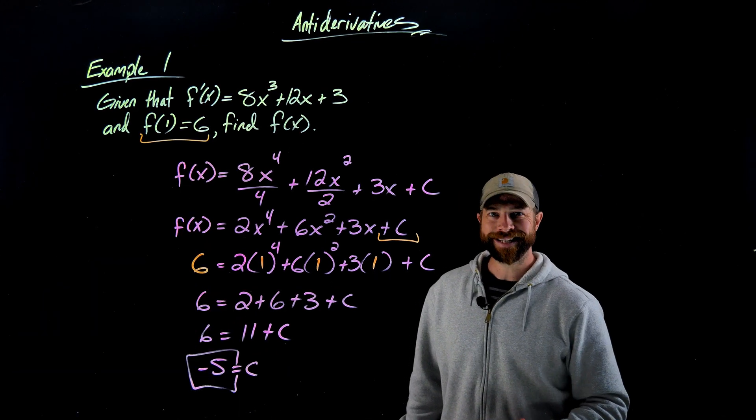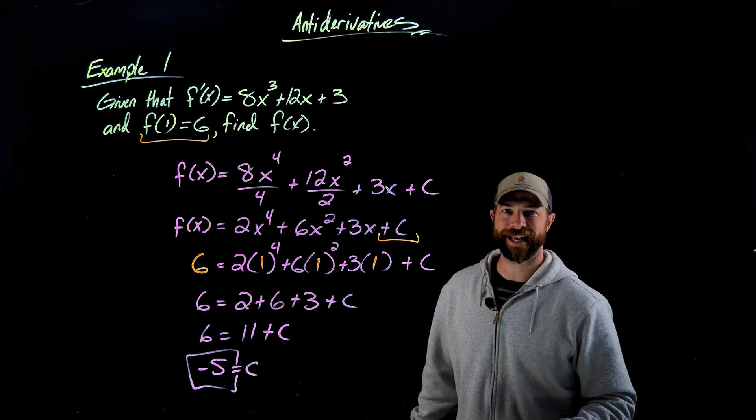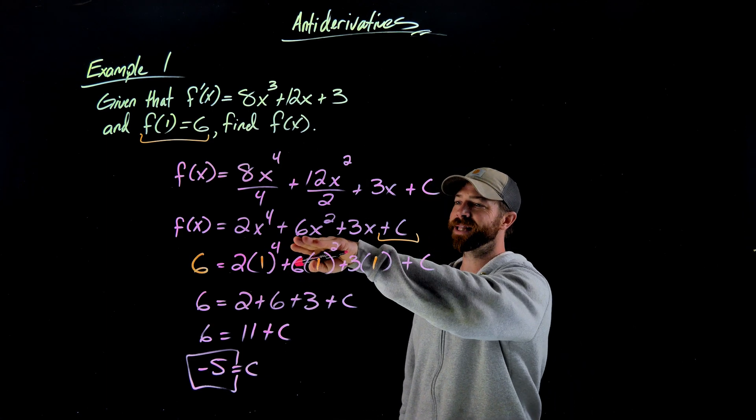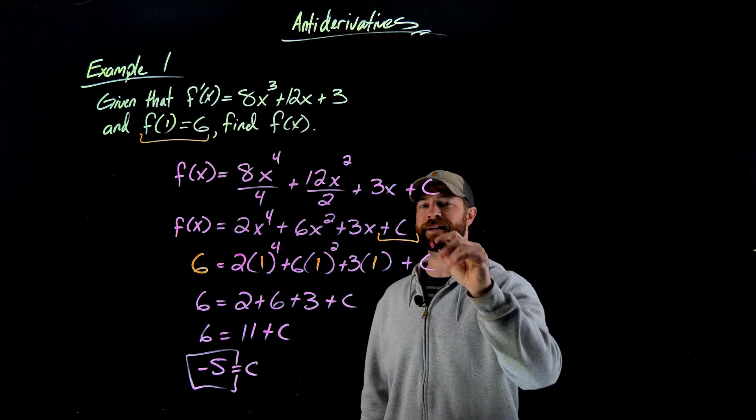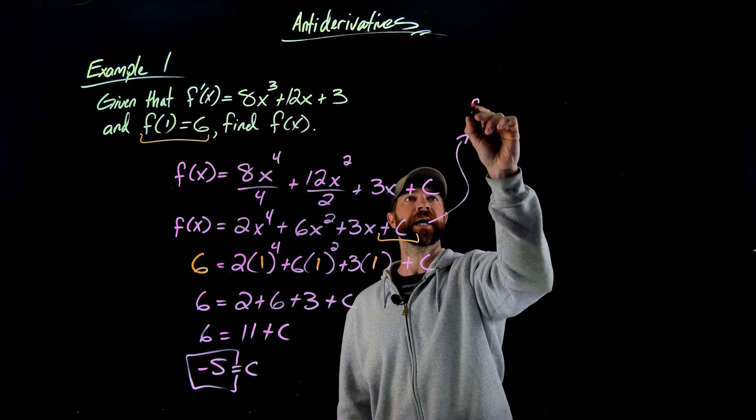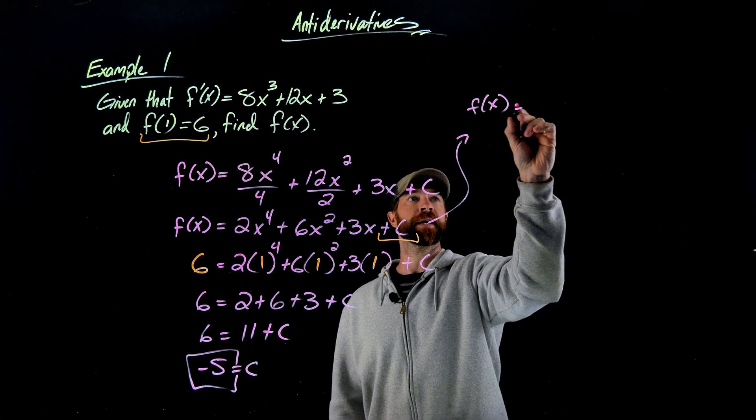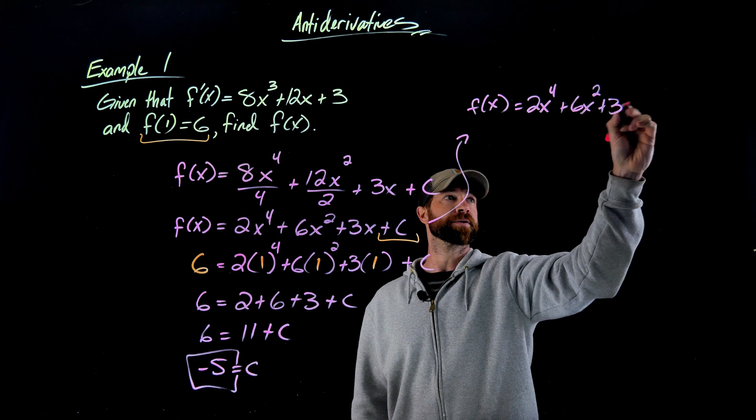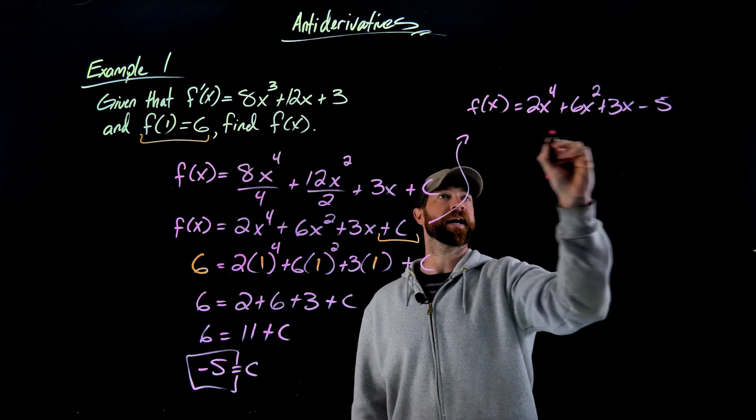Obviously my answer to this problem is not c equals negative 5. My answer is this original f of x function, which is simply this function right here, but with a negative 5 plugged in. So I get that my original function is 2x to the 4th plus 6x squared plus 3x minus 5.